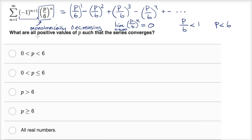And they told us to find all positive values of p, so we also know p has to be greater than zero. So p is greater than zero and less than six. We're not saying less than or equal to six, because if p was equal to six, this term would be one to the n, and we'd just have one minus one plus one on and on forever. So the answer is definitely that first choice.